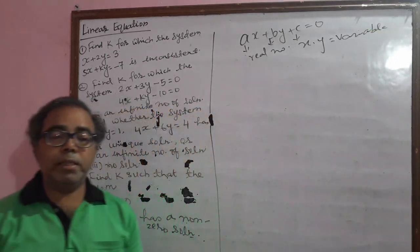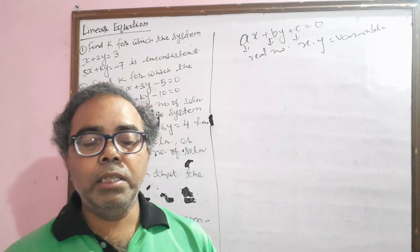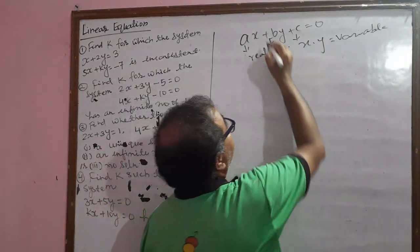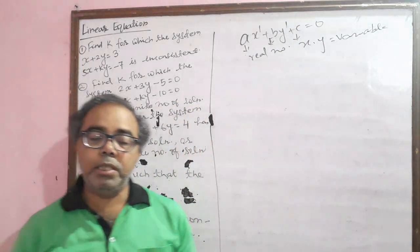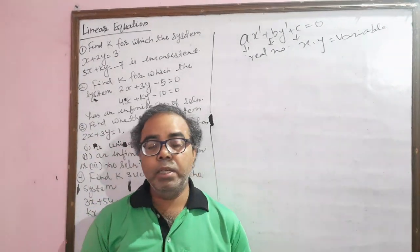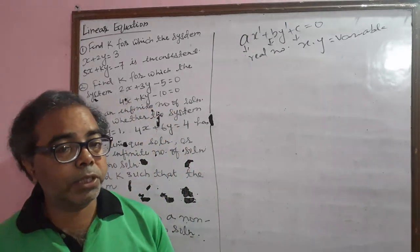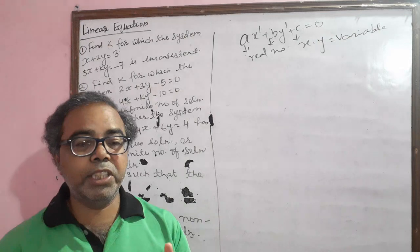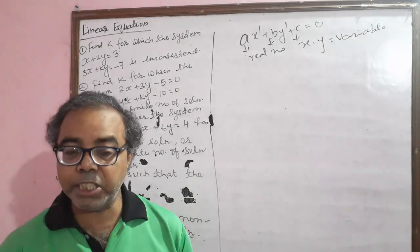When two simultaneous linear equations are given, linear equation means the highest power of the variables is one. If the highest power of the variable is two, it is the quadratic form. So if two simultaneous linear equations are given, we have three kinds of results we can get from those two linear equations.